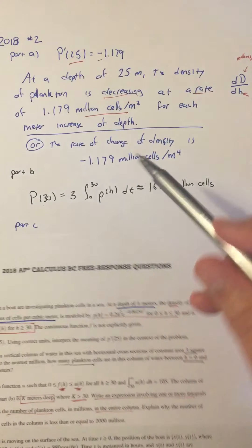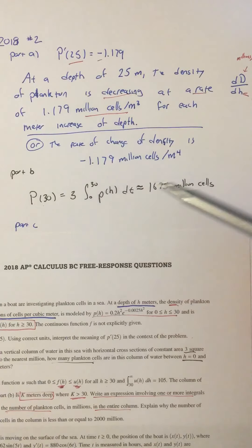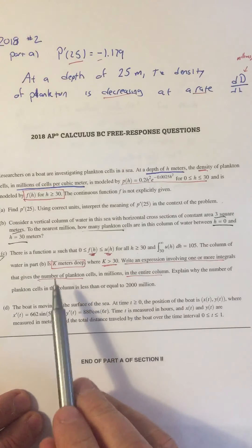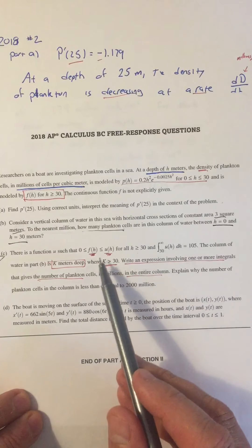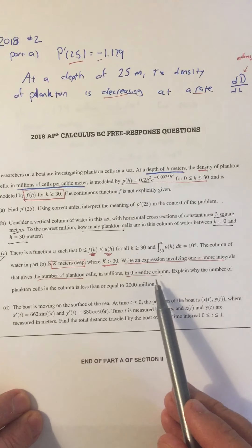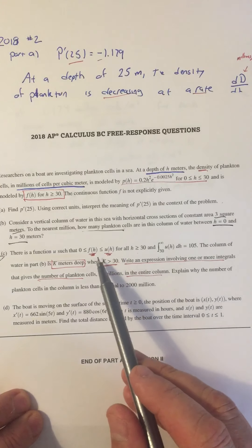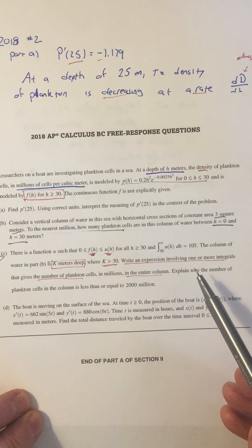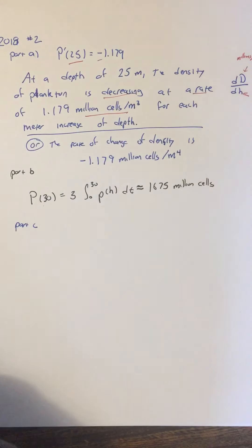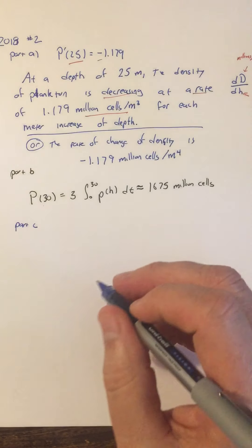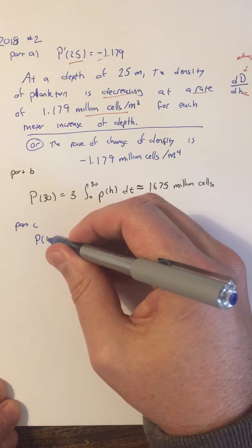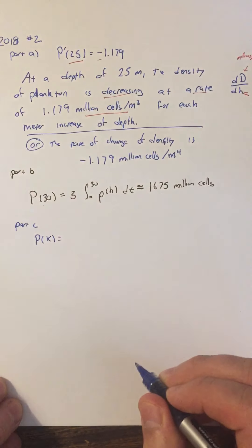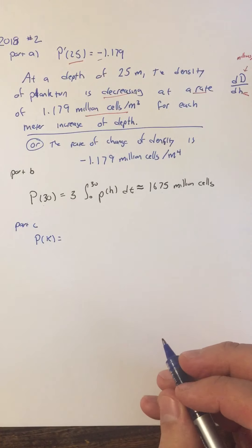In part B we found the number of plankton up to 30 meters. Now we want to go past 30 meters to depth k. Since we don't know f of h explicitly, we'll just write an integral expression involving f that captures the plankton count in that column. So instead of p of 30, we're looking at p of k where k is greater than 30.